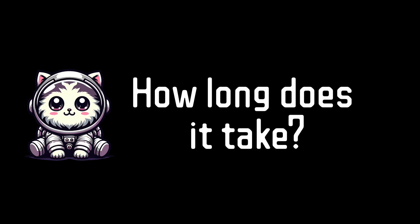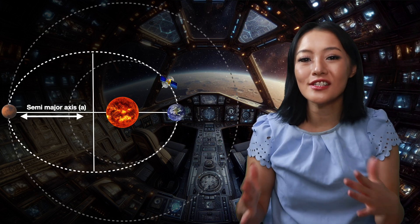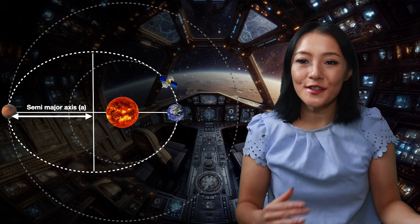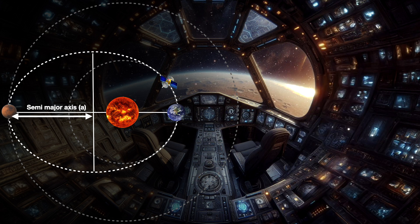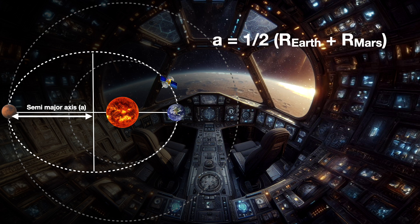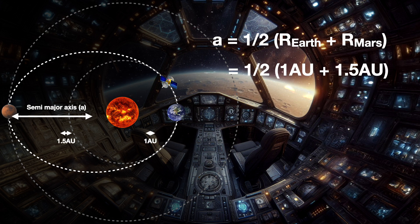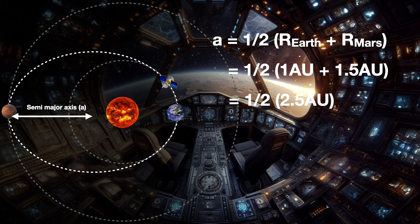So now we know how we get to Mars, but how long does it take? The first thing we need to do is calculate the semi-major axis of the Hohmann transfer orbit. The semi-major axis is the average distance from a point on the ellipse to the center of the ellipse. In the context of the Hohmann transfer orbit, it's the average distance between Earth and Mars. So the semi-major axis A equals one half times (radius of Earth + radius of Mars) = ½ × (1 AU + 1.5 AU) = ½ × 2.5 AU = 1.25 AU.